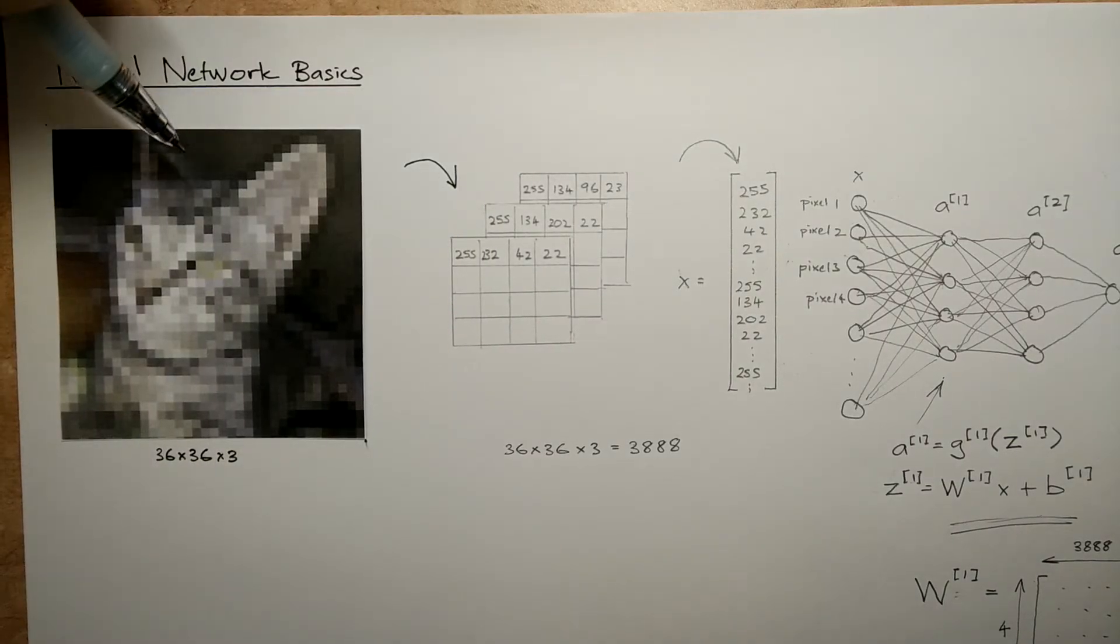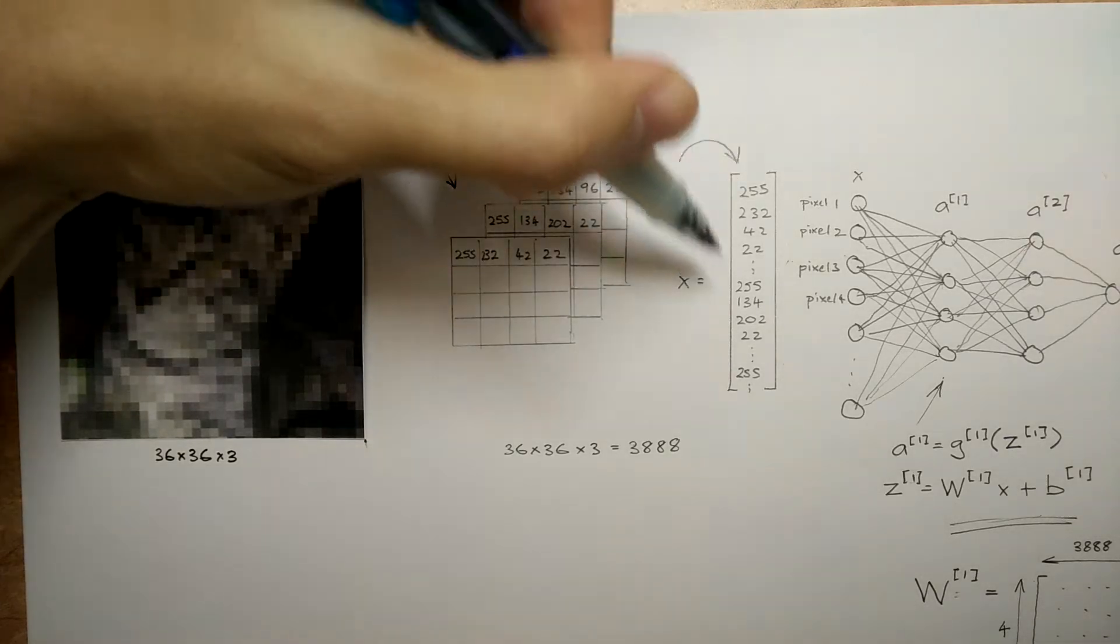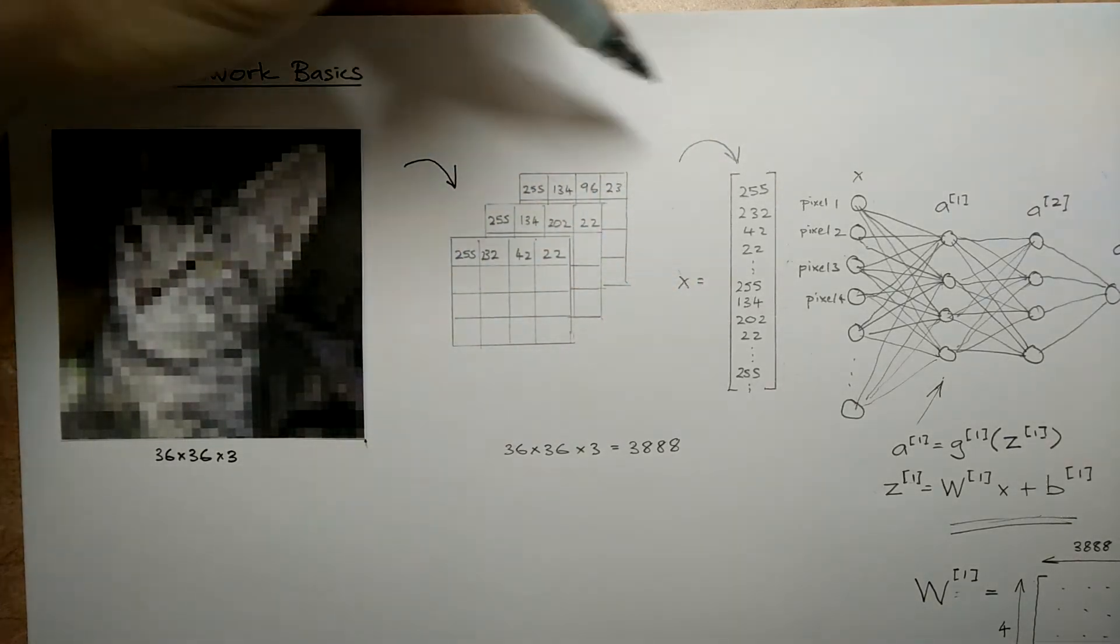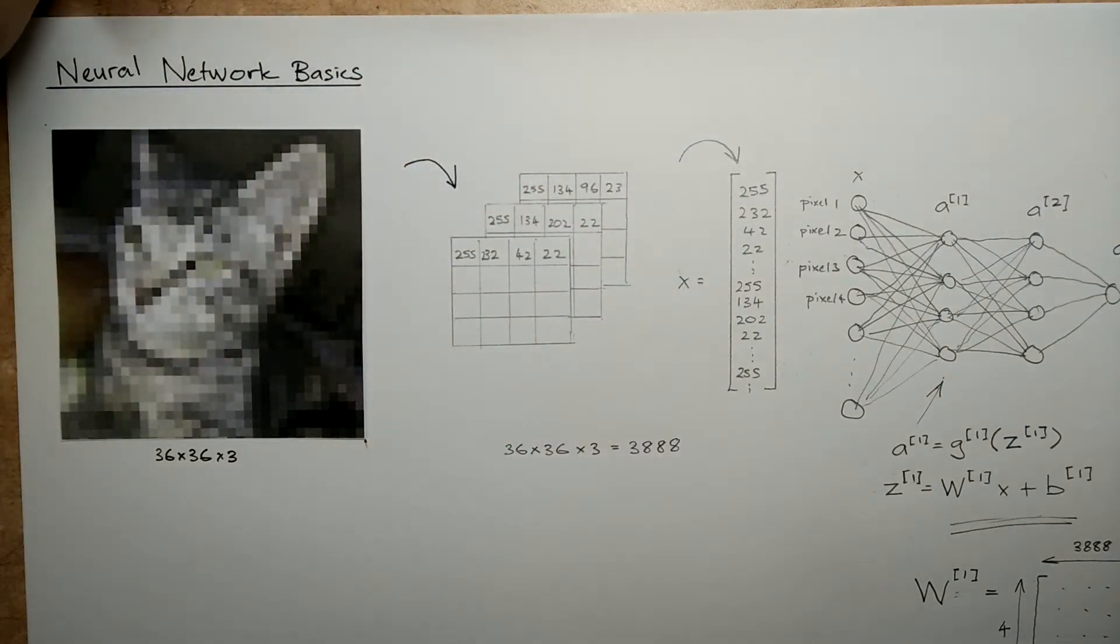The way it works in a fully connected neural network is that the image is unrolled into one long feature vector, so each pixel will now become one element in the new feature vector.